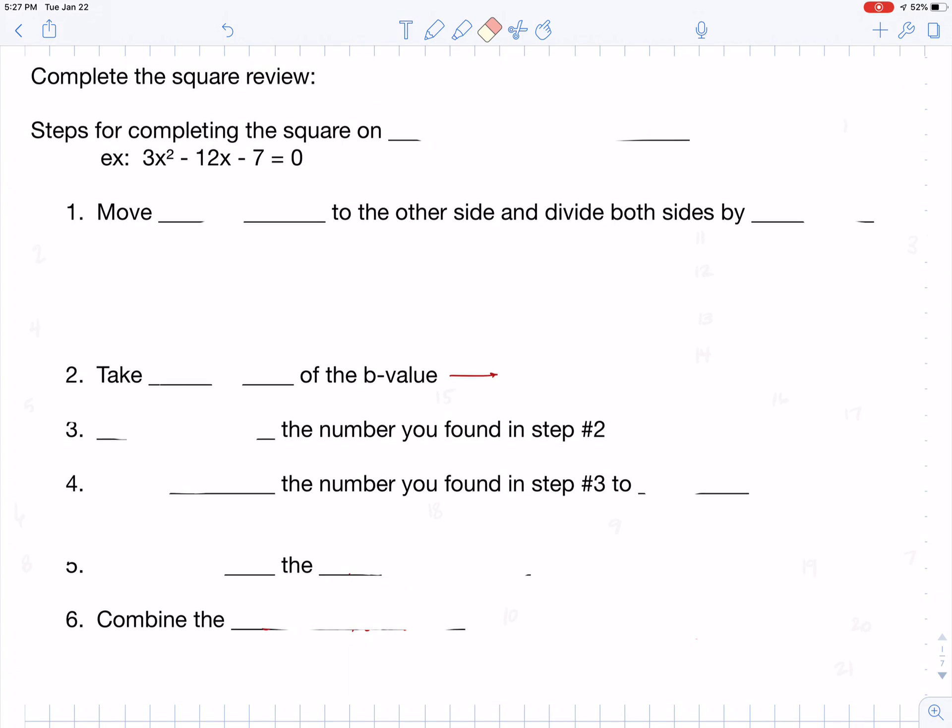So if you want to complete the square on the equation 0 equals ax squared plus bx plus c, and for the record, the whole reason that you would want to complete the square is because it's going to give you the vertex form once you're finished.